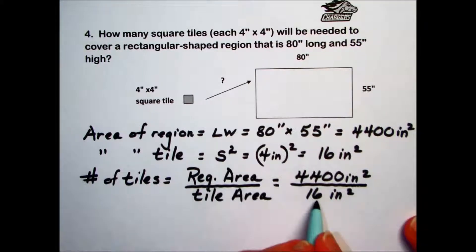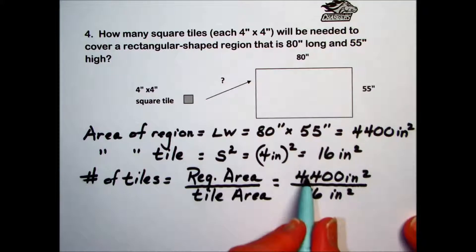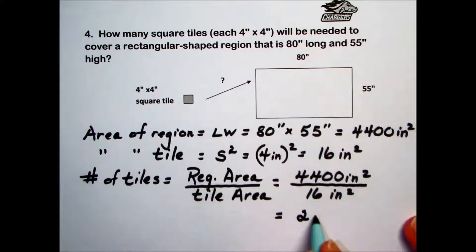How many 16 square inch sections are there in this floor that has 4,400 square inches? When we do the division, we end up with 275 tiles needed to accomplish the task.